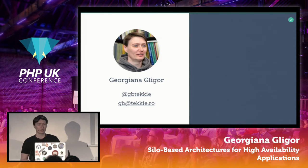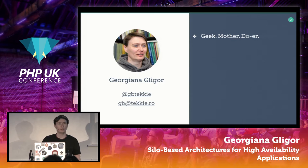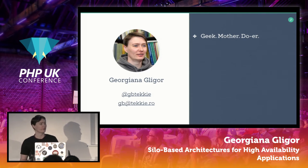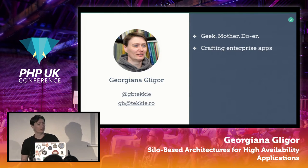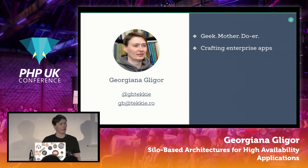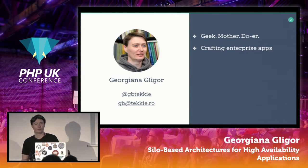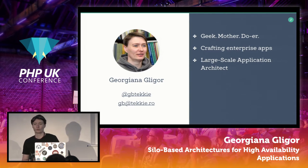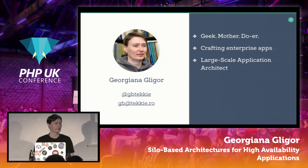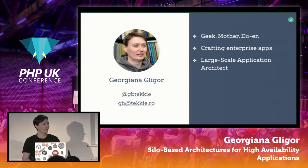My name is Georgiana Gligor. I'm coming from Romania. I've been developing with PHP for quite a long time — more than 13 years — and I have a wonderful three-year-old waiting for me at home. My specialty is crafting enterprise applications, so I tend to go the extra mile and work on larger portions of apps. Over time my role shifted from junior and mid-level developer to more of an architect role, which I really enjoy.